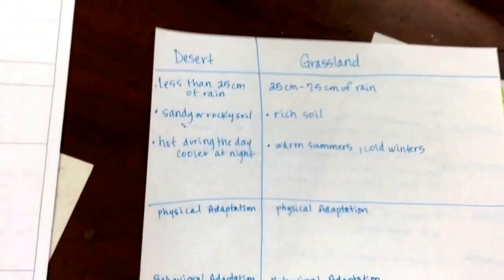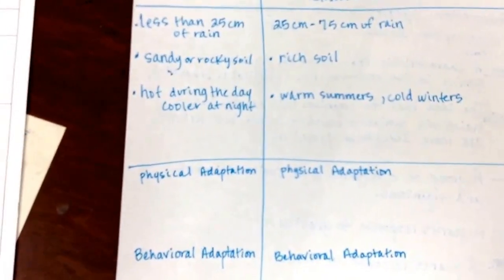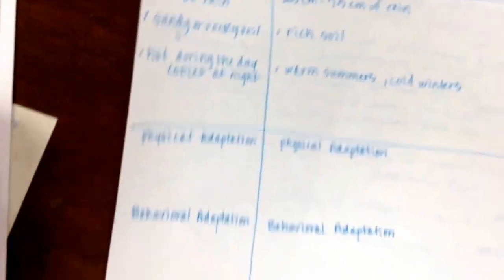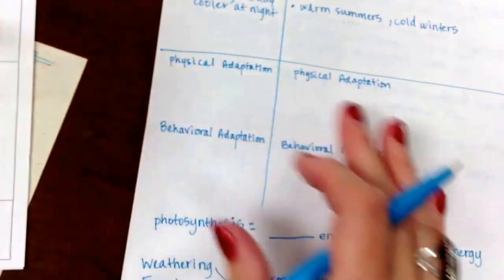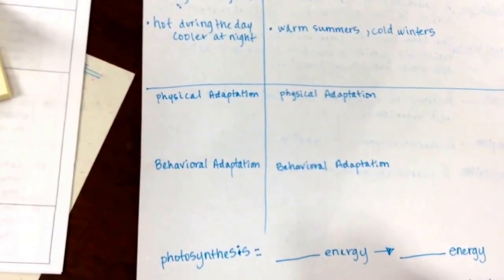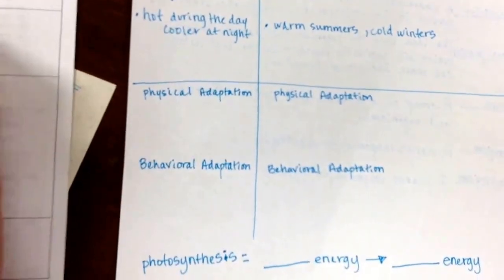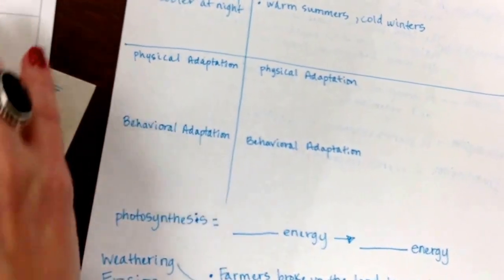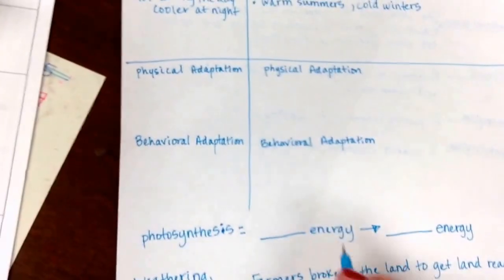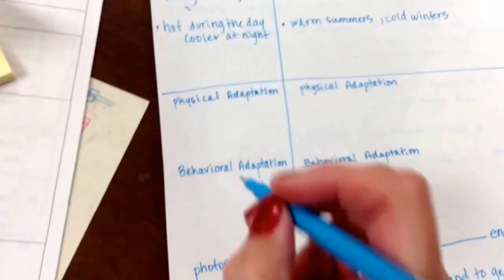Let's continue on. And since we talked about adaptation, let's review that. A characteristic that helps an organism survive. And I'm going to write it can be physical or behavioral which would be an action. So let's go back to where we were talking about the desert and grassland. A physical adaptation for a desert organism - it could be a cactus, it could be a kangaroo rat, it could be a hawk, it could be a snake, the jackrabbit. So a physical adaptation would be something on the organism that helps survive in the desert.